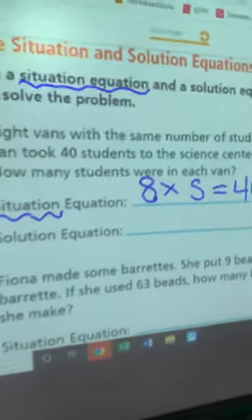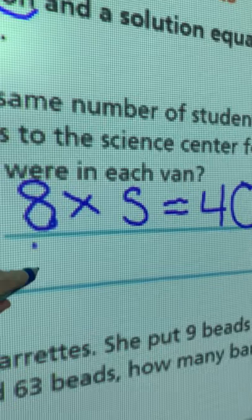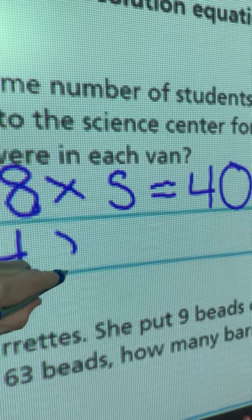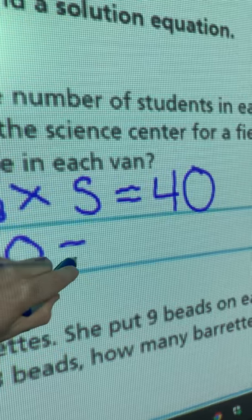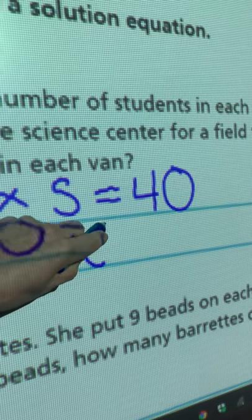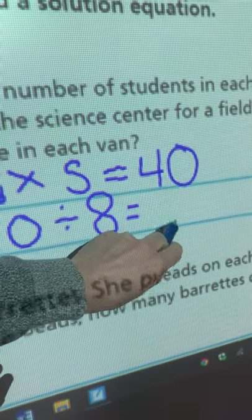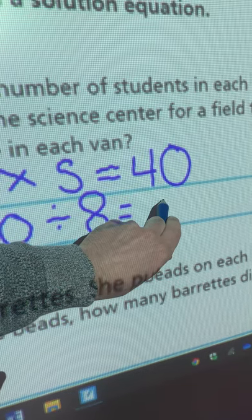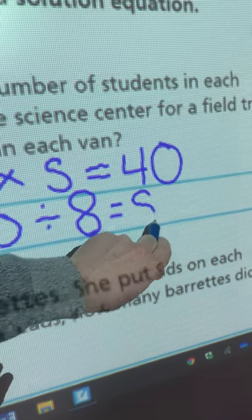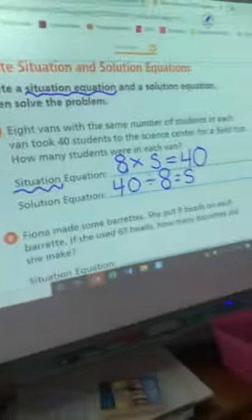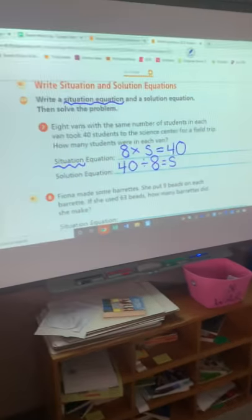So our solution equation for this one is going to be 40. We're going to start with that big number. Divide by the smaller number. We're going to count by this smaller number. We're going to count by eights until we get how many students are in each bus, or I guess a van.